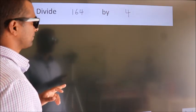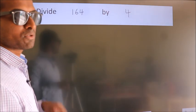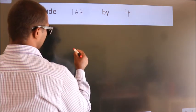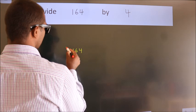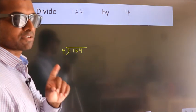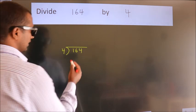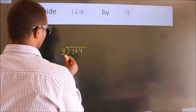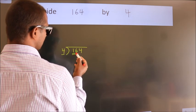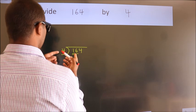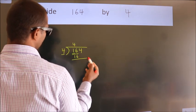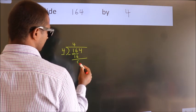Divide 164 by 4. To do this division, we should frame it as 164 divided by 4. Step 1: here we have 1, and 1 is smaller than 4, so we should take two numbers: 16. When do we get 16 in the 4 times table? 4 fours are 16. Now we subtract and we get 0.